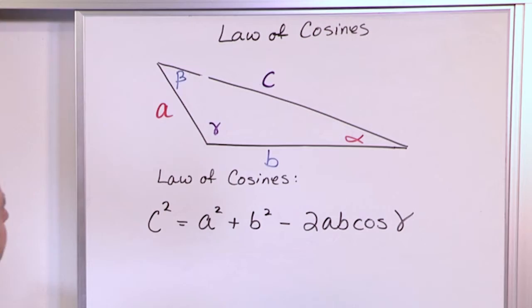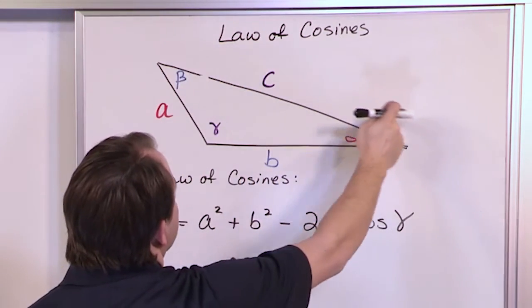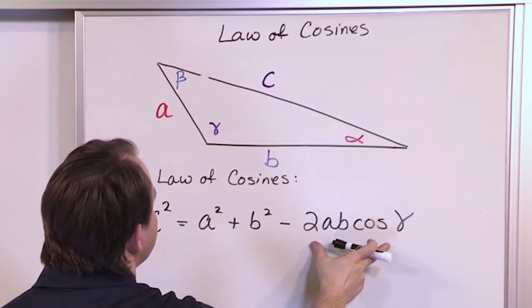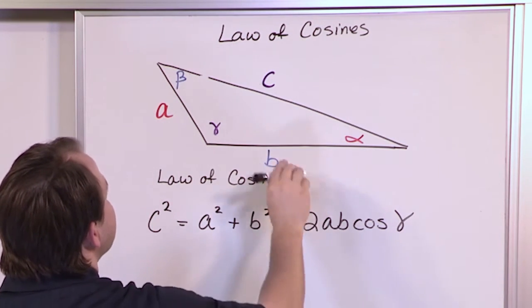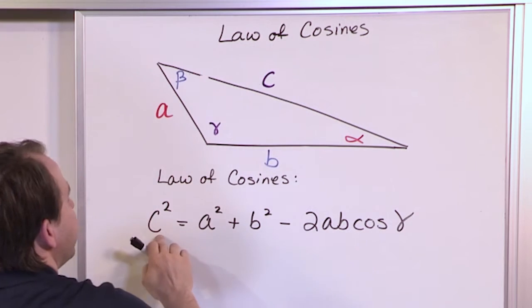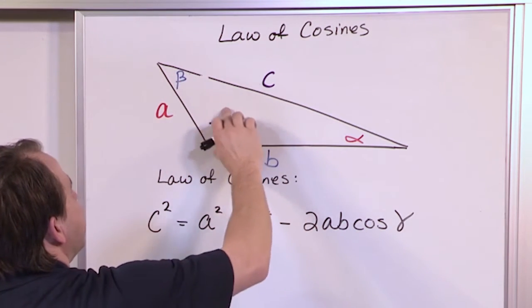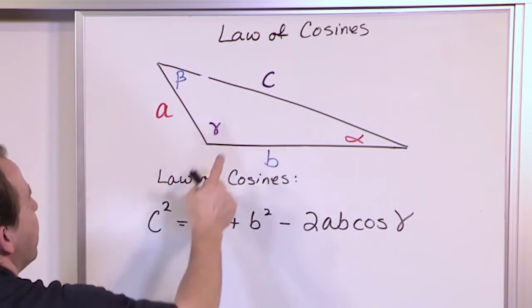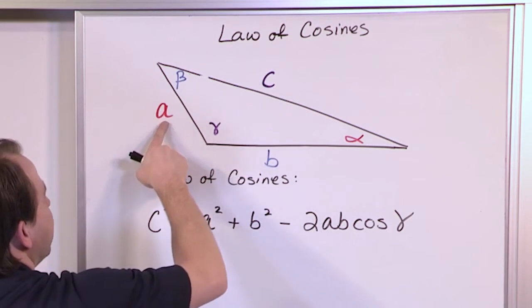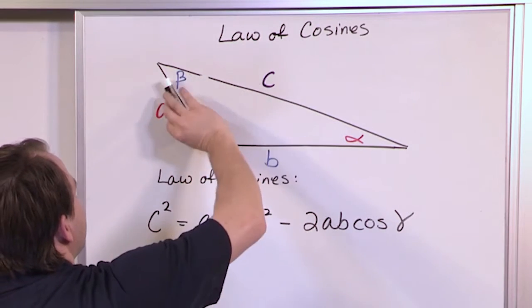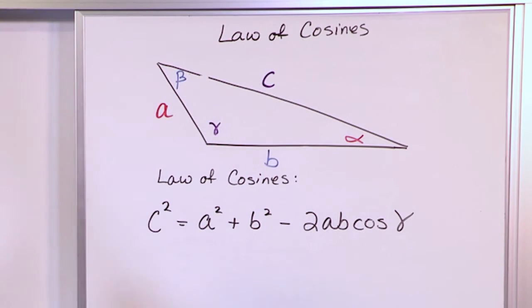So literally what you're doing is to find the length of the longest side, c squared. It's a squared plus b squared but you're subtracting off a term. This term is 2 times the other two legs other than the one I was trying to find. The other two legs times the cosine of the angle that falls between them. So again this side squared is equal to this squared plus this squared minus 2 times those sides that I don't know times the cosine of the angle in the middle.